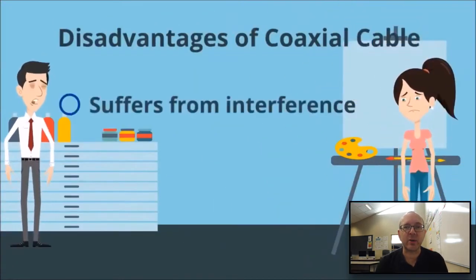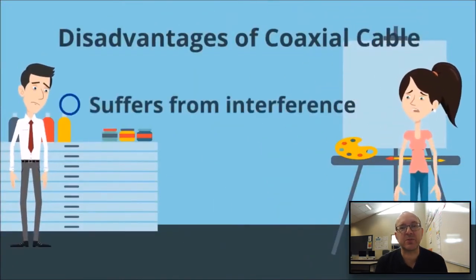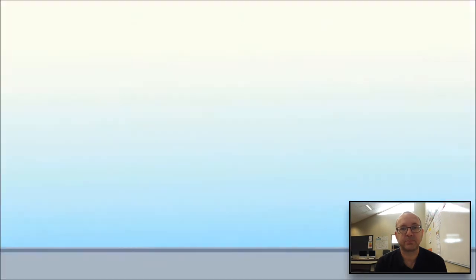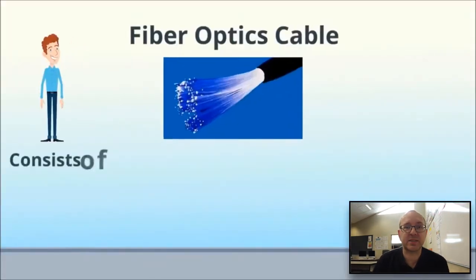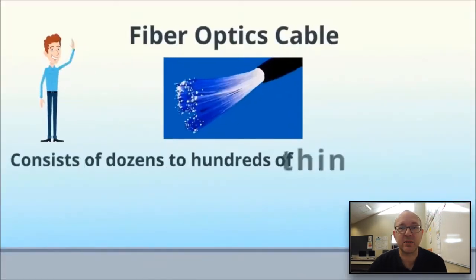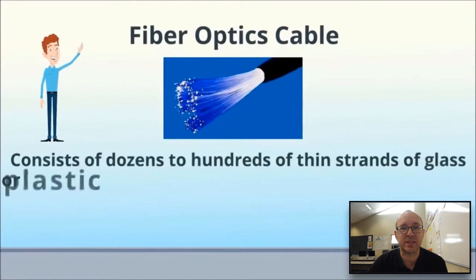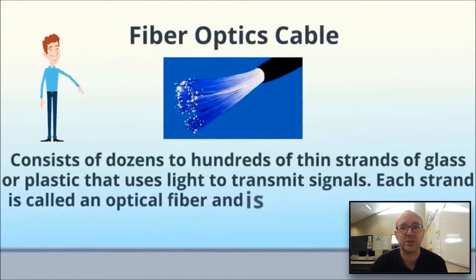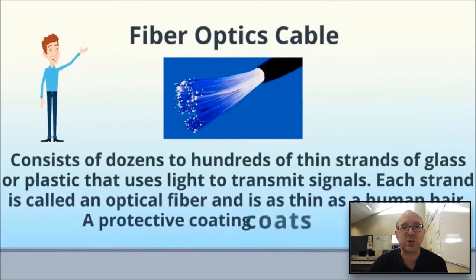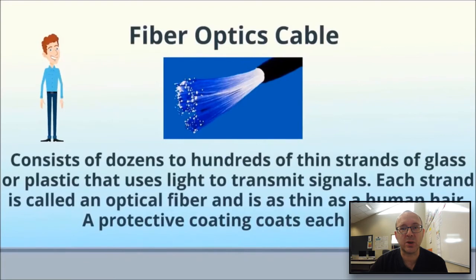Coax can also cover longer distances than twisted pair cable. The disadvantage of coax is that it suffers from interference. Fibre optic cables consist of dozens to hundreds of thin strands of glass or plastic that use light to transmit signals. Each strand is called an optical fibre and is as thin as a human hair, with a protective coating on each fibre.